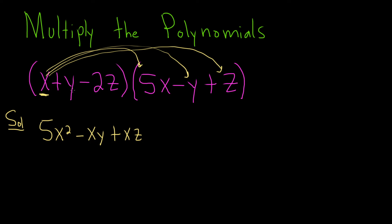So then it's y times 5x. That's going to give us 5xy. And then y times negative y. That'll become a negative y squared. And last but not least, y times z will give us plus yz.